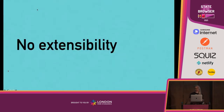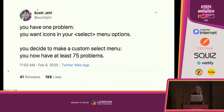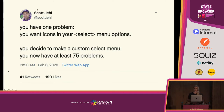On top of poor CSS access and browser inconsistencies, we can't actually extend the functionality of a control. I love this tweet from Scott Jell: "You have one problem. You want icons in your select menu options. You decide to make a custom select menu. You now have at least 75 problems." That's because when you rebuild a control from scratch instead of using the native control, you don't get all of the good stuff baked in, like accessibility and security. So as a developer you have to add all that back in and test it. That's a bad developer experience, but it's necessary when you can't extend your controls the way you need to.